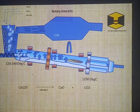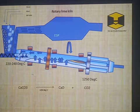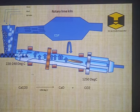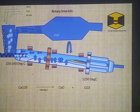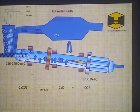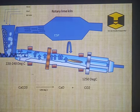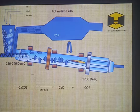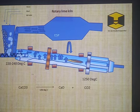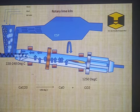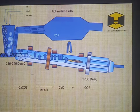This is a diagrammatic explanation of a rotary lime kiln and how it works. As you can see in the reaction, one mole of calcium carbonate (CaCO₃) is converted into one mole of calcium oxide (CaO) and one mole of carbon dioxide (CO₂) when heated at a temperature of 1200 to 1250 degrees centigrade.